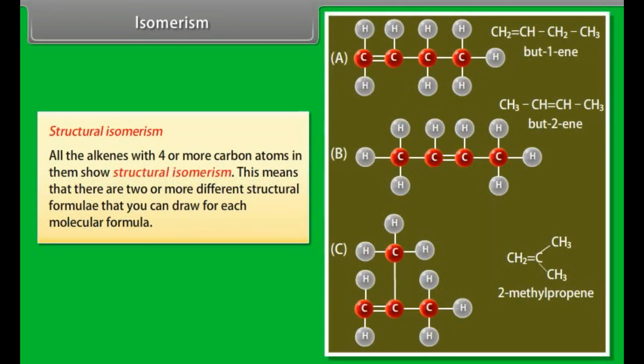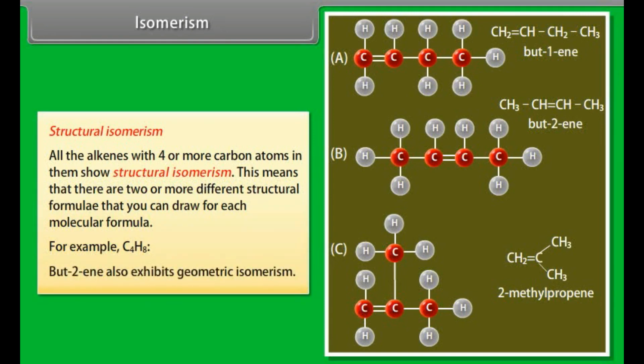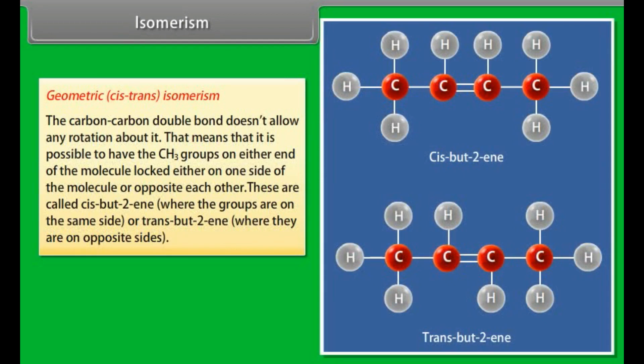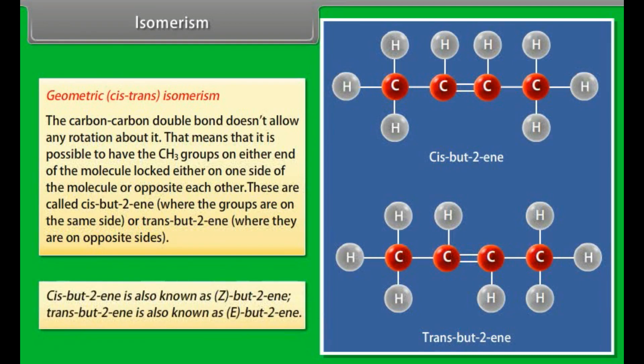Isomerism. Structural isomerism. All the alkenes with four or more carbon atoms in them show structural isomerism. This means that there are two or more different structural formulae that you can draw for each molecular formula. For example, with C4H8, it isn't too difficult to come up with these three structural isomers. There is, however, another isomer. Bute-2-ene also exhibits geometric isomerism. Geometric cis-trans isomerism. The carbon-carbon double bond doesn't allow any rotation about it. That means that it is possible to have the CH3 groups on either end of the molecule locked either on one side of the molecule or opposite each other. These are called cis-bute-2-ene where the groups are on the same side, or trans-bute-2-ene where they are on the opposite side. Cis-bute-2-ene is also known as Z-bute-2-ene. Trans-bute-2-ene is also known as E-bute-2-ene.